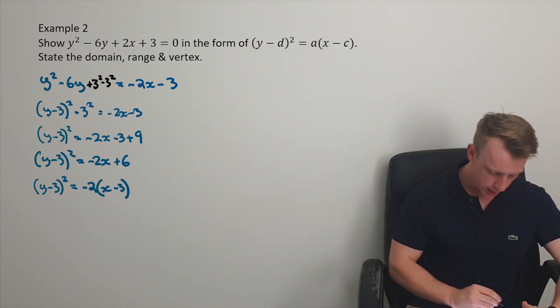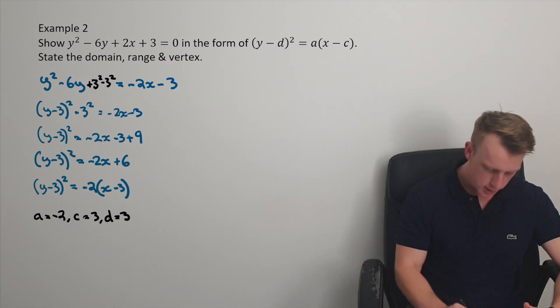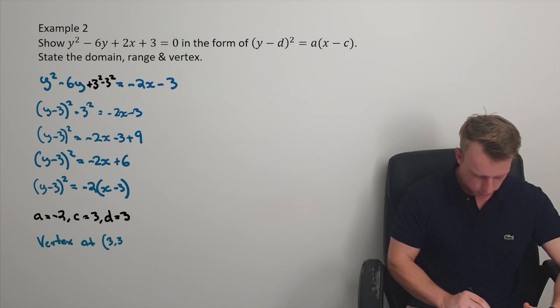So here then we can state off what we've got. a is equal to negative 2, c is equal to 3, and d is equal to 3. So then we can start stating stuff. We've got a vertex at the point (3, 3).